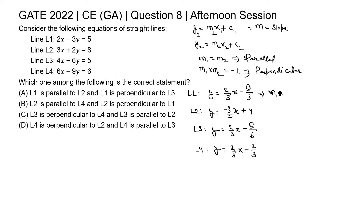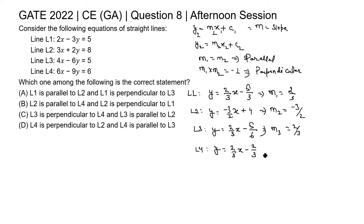So the slopes are: m1 = 2/3 for line L1, m2 = −3/2 for line L2, m3 = 2/3 for line L3, and m4 = 2/3 for line L4. These are the slopes of the four lines.